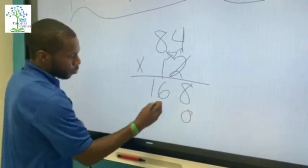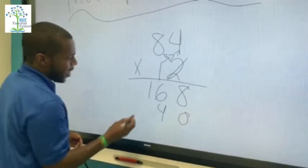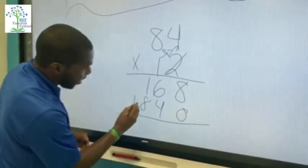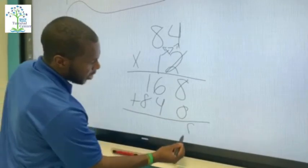One times four equals four. One times eight is eight. I'm gonna add these together. Eight plus zero is eight.